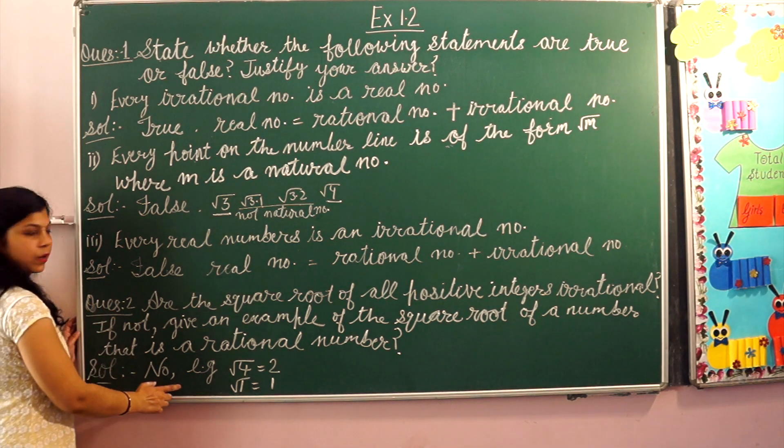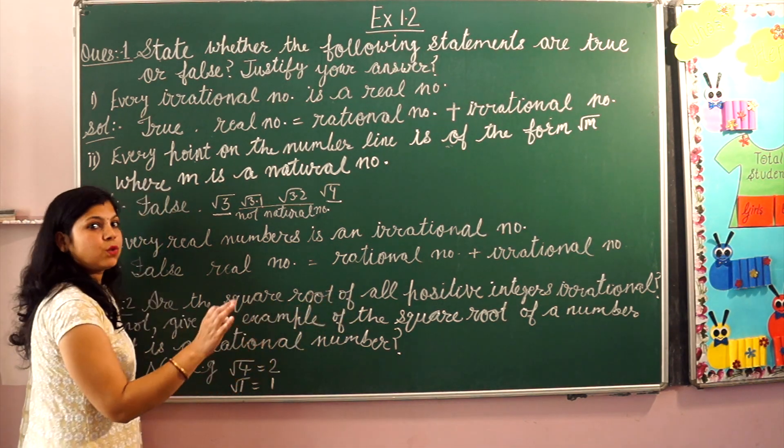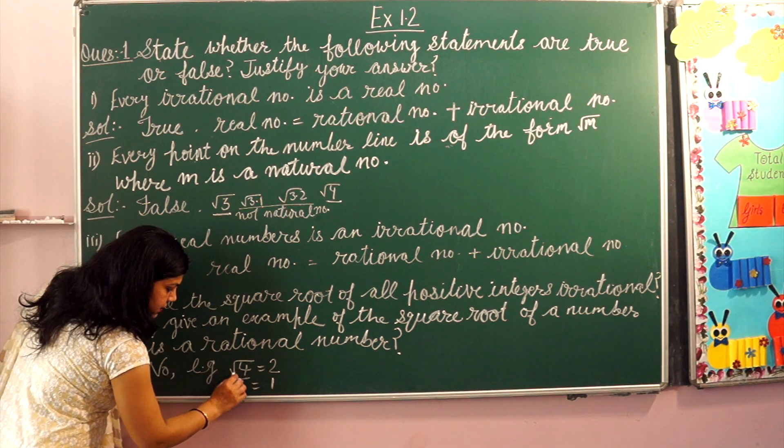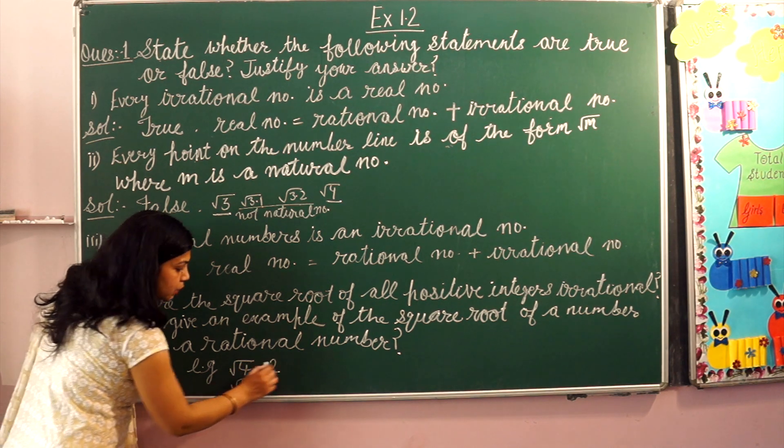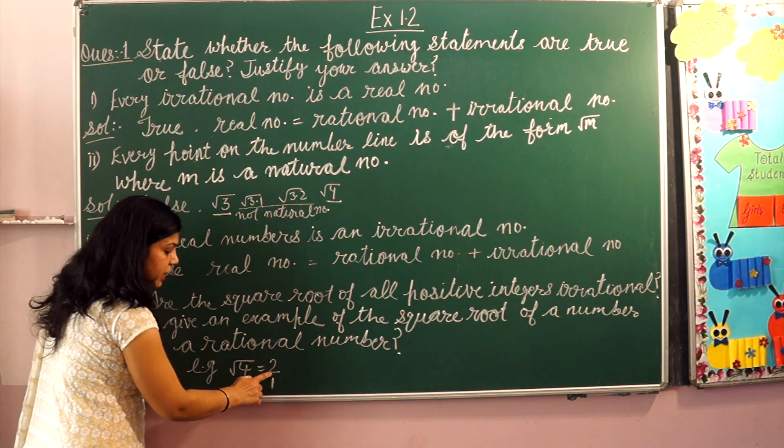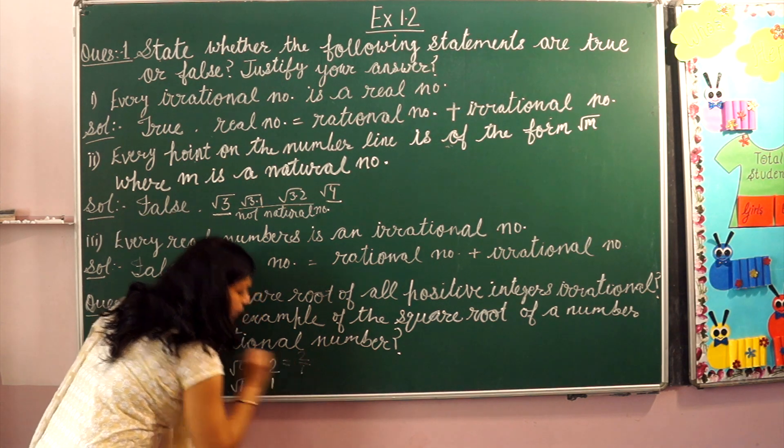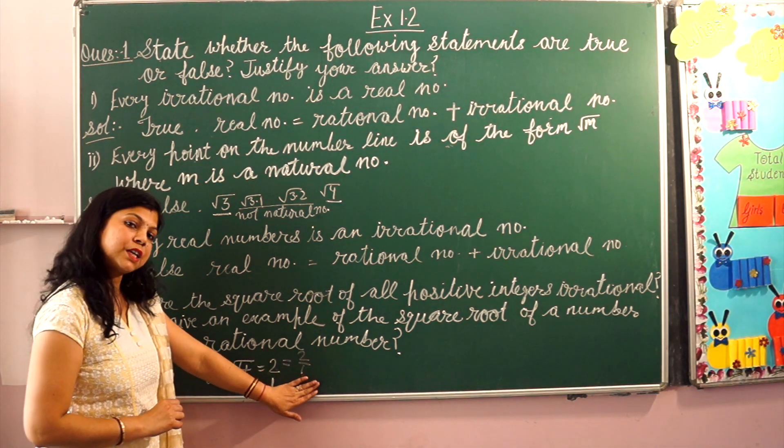The question asks: are all positive integers irrational in square root form? If this statement is wrong, give an example that is rational. This statement is false. Because all positive integers do not have irrational square roots. For example, take 4. If we find square root of 4, it is 2.